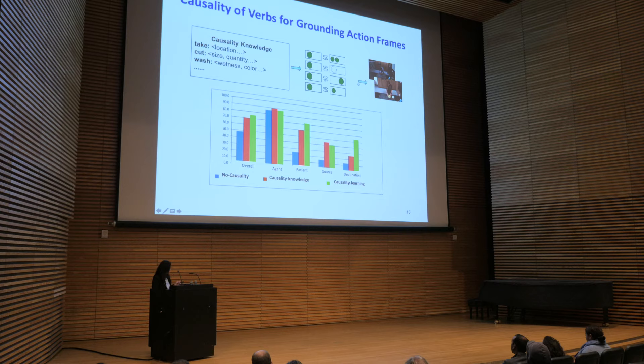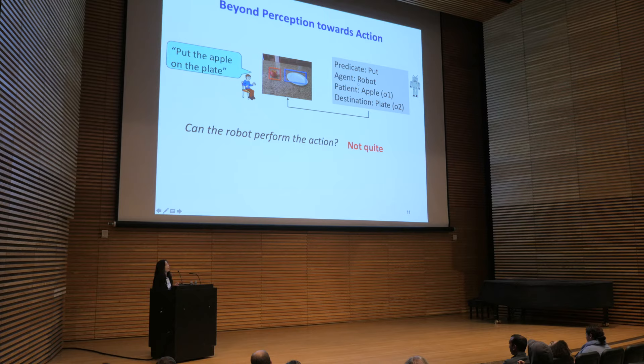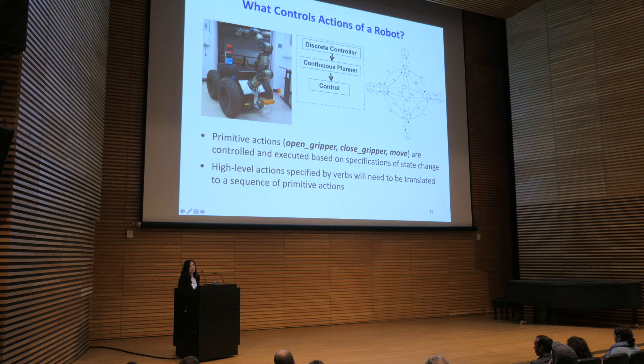That's one example about linking action verbs to perception. But we have another question: suppose the robot can perfectly ground 'put the apple on the plate' to the environment — can the robot actually perform the action? The answer is: not quite. Before I started working with roboticists, I thought robots were very smart. But after that, I had to change my thinking.